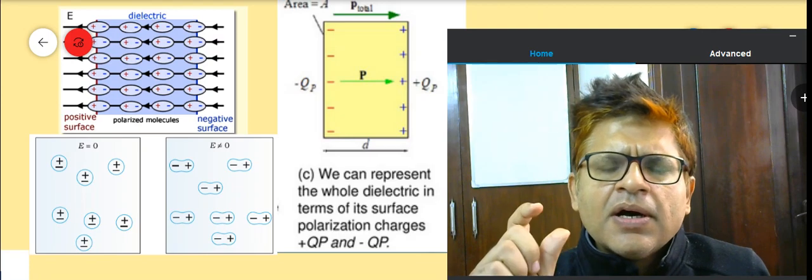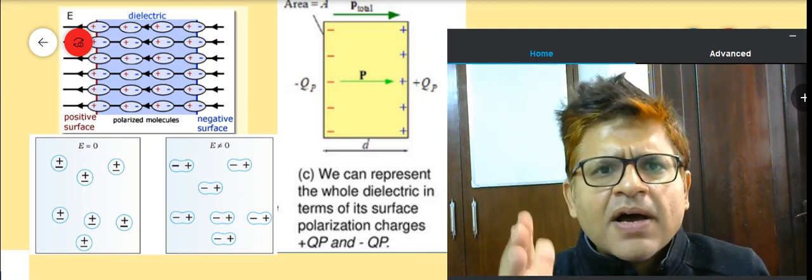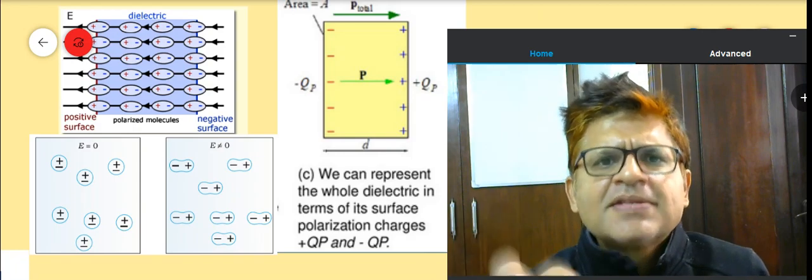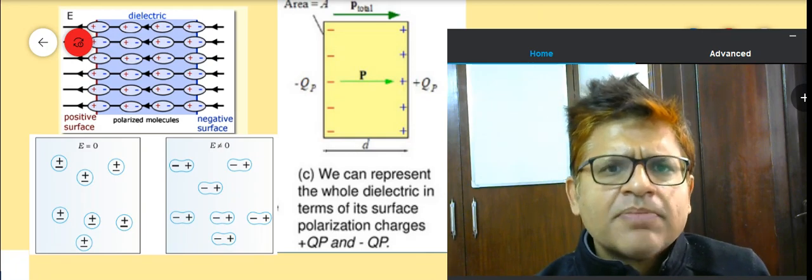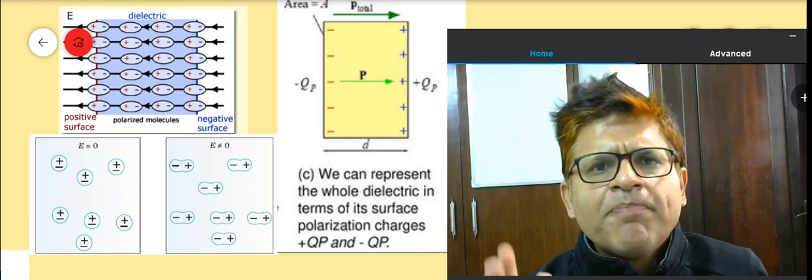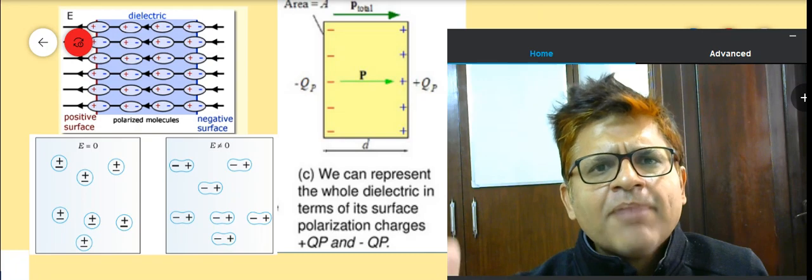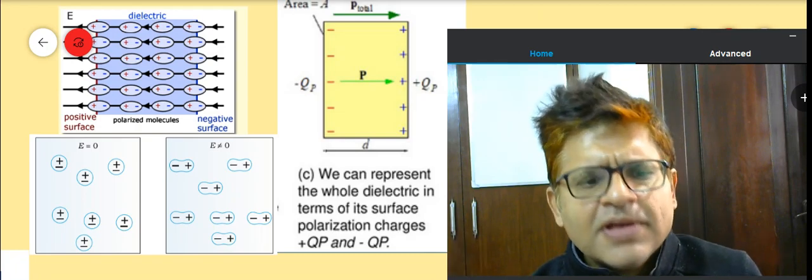So the dipoles that appear on the surface are responsible for the surface polarization charge. Otherwise inside the bulk of the dielectric there is no charge because it gets cancelled. It's a dipole, plus and minus gets cancelled. What appears is the charge due to the dipoles which don't get cancelled at the surface. Thank you.